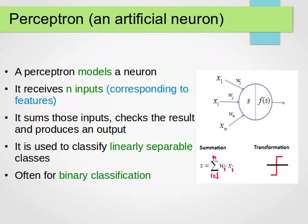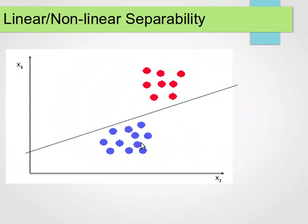So remember, we have two linearly separable classes, maybe red class, blue class, and we want to find a straight line, any straight line, that perfectly separates the two classes. Focus on any straight line.